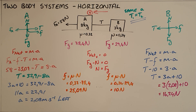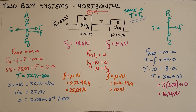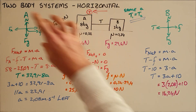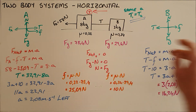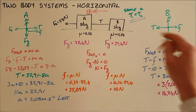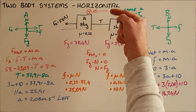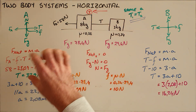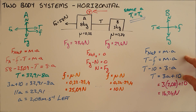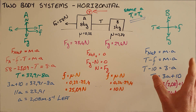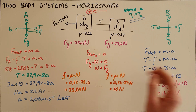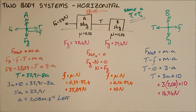The steps for two-body systems are always the same: start by drawing a free body diagram for each object, write a Newton's second law expression for each object, pick one reference direction and ensure all forces align with it, find two expressions for tension or acceleration, set them equal to each other, and solve for the unknowns.